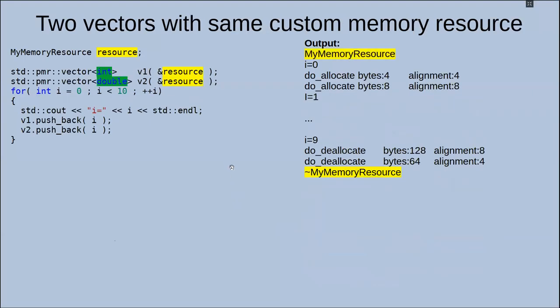But when we have two vectors, we just place same resource and we don't have each instance for each vector. And we have similar implementation and we can manage memory for both containers.